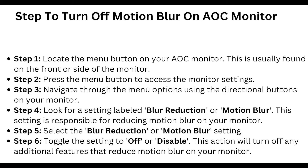Press the menu button to access the monitor settings. After this, navigate through the menu options using the directional buttons on your monitor, and look for the setting labeled 'Blur Reduction' or 'Motion Blur'. This setting is responsible for reducing motion blur on your monitor.